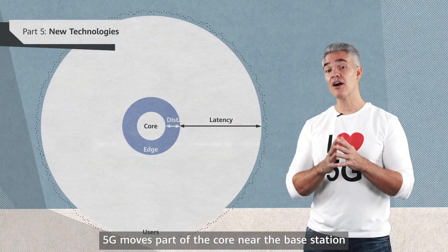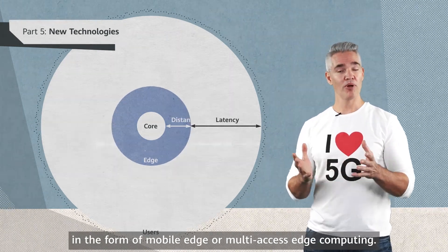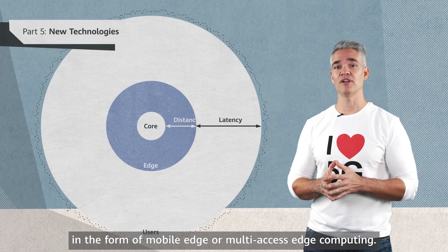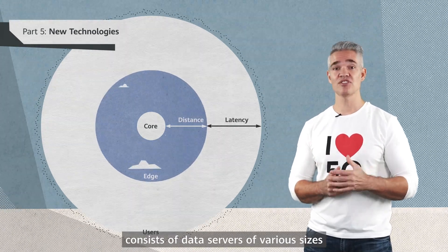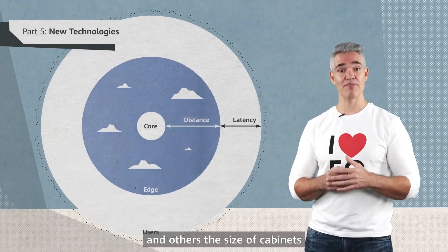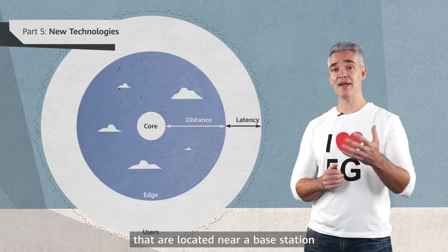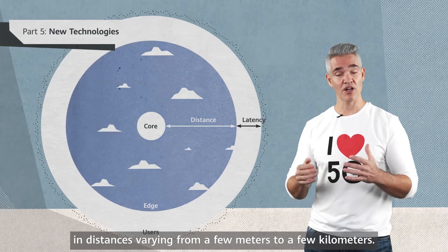5G moves part of the core near the base station, in the form of mobile edge or multi-access edge computing. Edge computing, also called cloud edge, consists of data servers of various sizes, some smaller than a desktop computer and others the size of cabinets, that are located near the base station, in distances varying from a few meters to a few kilometers.